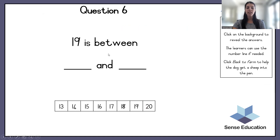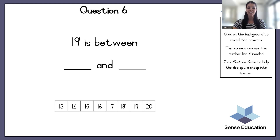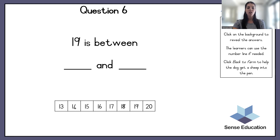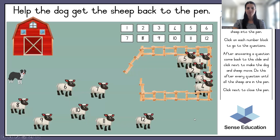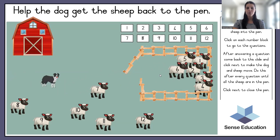Nineteen is between what two numbers? What are the two numbers on each side of nineteen? Use the number line if you do not know, or count backwards and then forwards again. The answer is eighteen and twenty — it goes eighteen, nineteen, twenty. Number six — we are almost there!